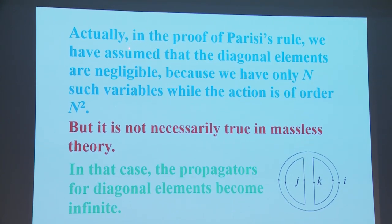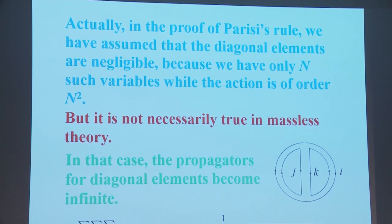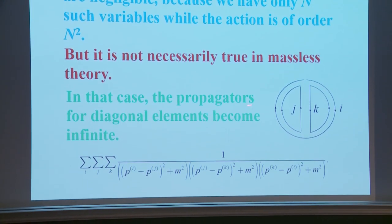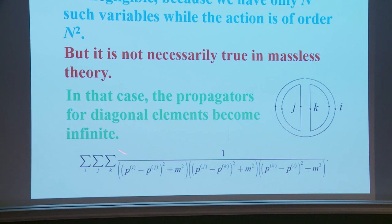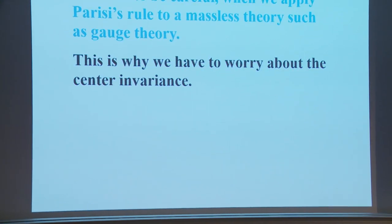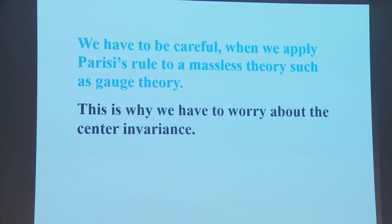In the proof of Parisi's rule, we assumed the diagonal elements are negligible because there are only N such variables while the action is of order N². But this is not necessarily true in the massless theory — in the massless theory, the propagators for diagonal elements become infinite. For example, the propagator is (p_i - p_j)² + m², and if m²=0 and i=j, this is zero, giving infinity. So we must be careful when applying Parisi's rule to a massless theory such as gauge theory. This is why we have to worry about the center invariance.